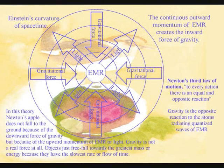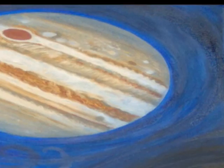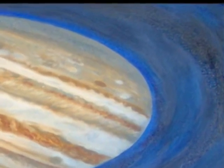In this theory, gravity is a secondary force to the electromagnetic force. Objects just freefall towards the greatest mass or energy because it has the slowest rate that time flows.